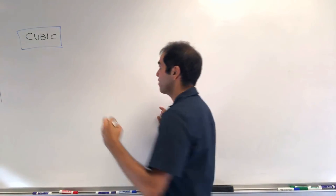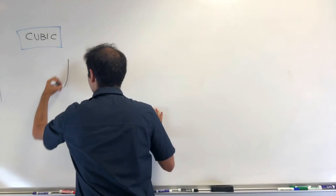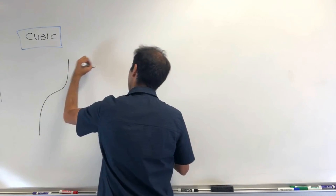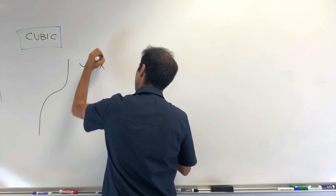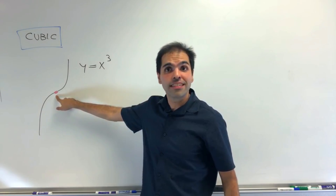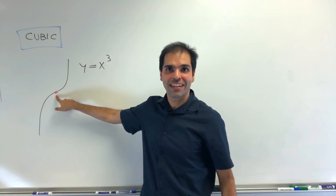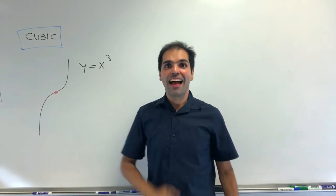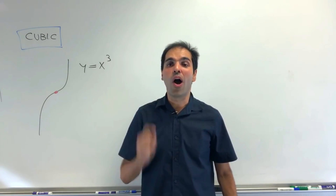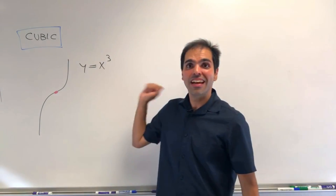For example, y equals x cubed — notice it's symmetric about the origin. And it turns out this is always true for cubic polynomials.